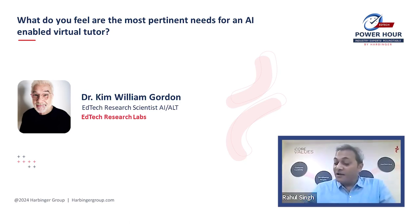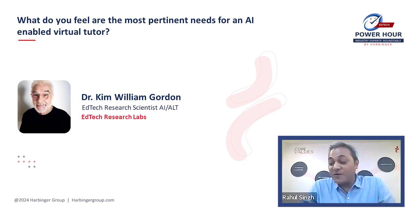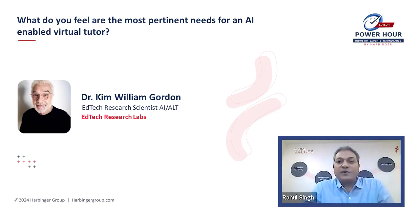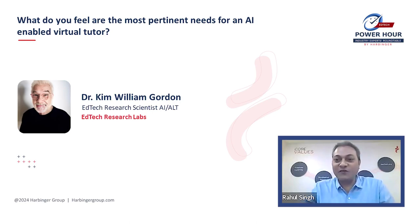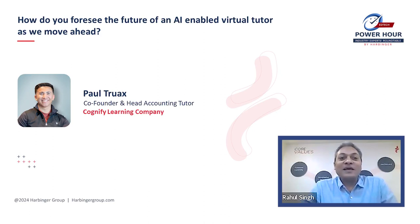Thank you for elaborating on that — every conversation I have with you, Kim, I learn two or three new things. The Two Sigma Problem is something new I've learned today and I encourage everyone to look it up. The point about just-in-time education and whether AI is smart enough to figure out the subtle nuances where a learner gets stuck is a question we'll divert to Paul, because we're more or less talking about next-generation AI-enabled virtual tutors and how to build them.